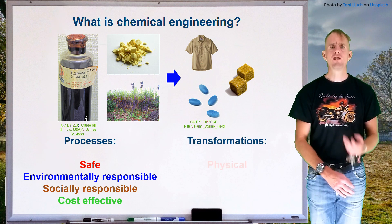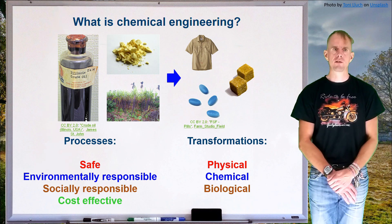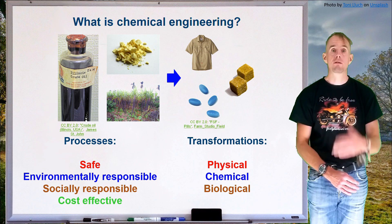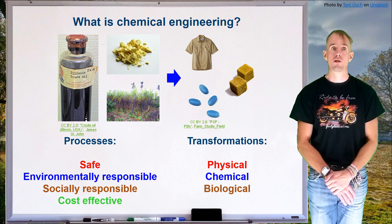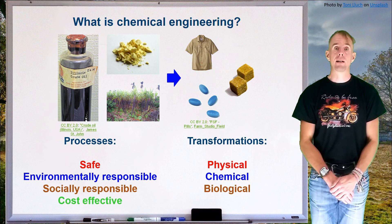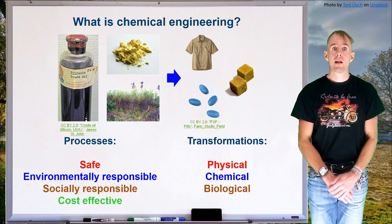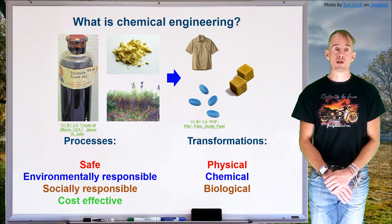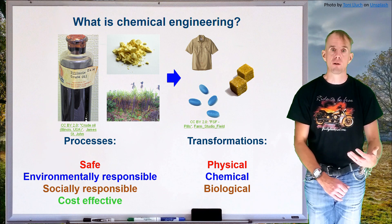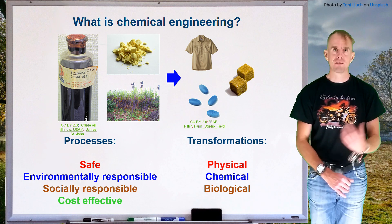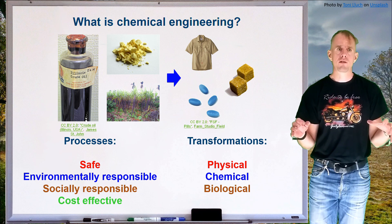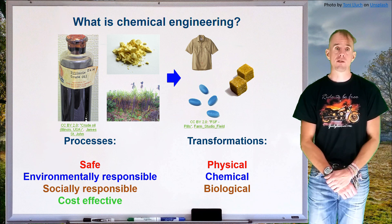The sorts of transformations taking place in these processes are very wide-ranging. They can be physical transformations — for example, crystallising sugar from a sugar solution. They can be chemical transformations — for example, turning raw sulphur into sulphuric acid. They can also be biological transformations — a good example being sugarcane biologically transformed into ethanol, which is a very popular transformation. These transformations typically take place on molecular length scales.